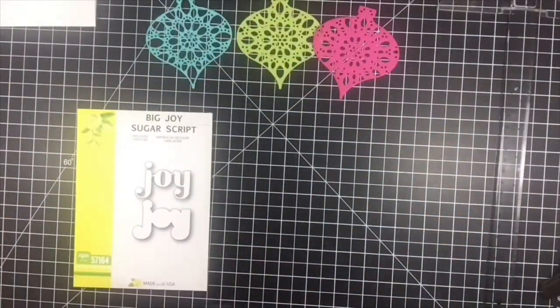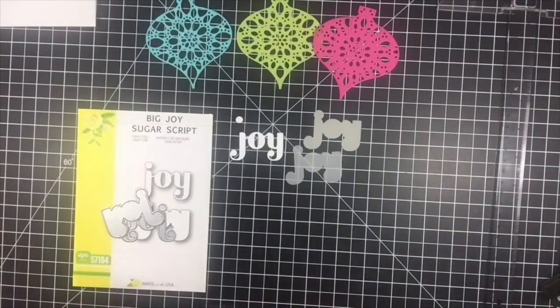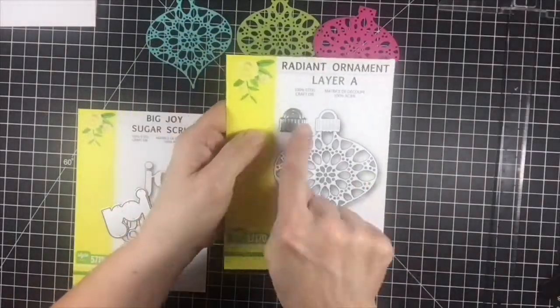I started off die cutting layer A from bright teal, layer B from green, and layer C from a bright pink cardstock.